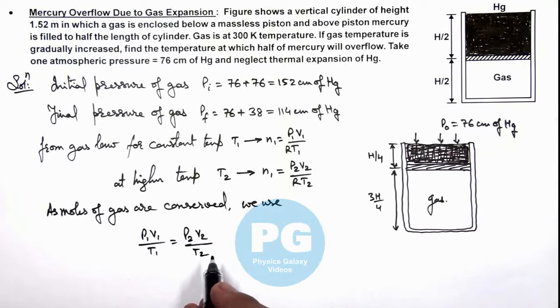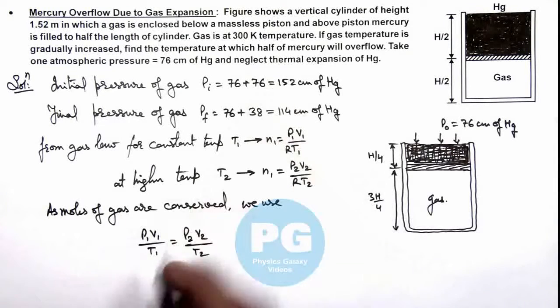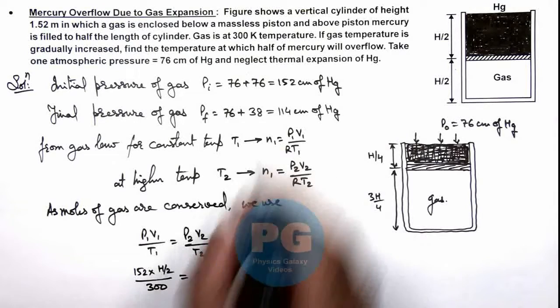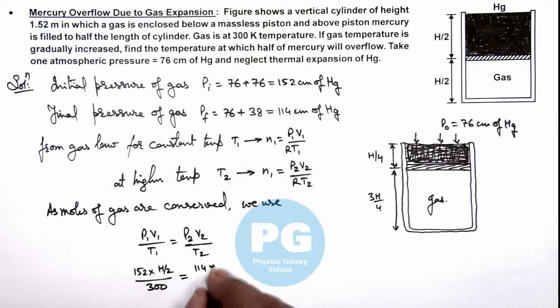In this situation, here we can write initial pressure of gas is 152, the volume of gas we can consider initially as h by 2, and temperature is given to us as 300 Kelvin. In final state, gas pressure is changed to 114, gas volume is increased to 3h by 4, and the final temperature is T_f.